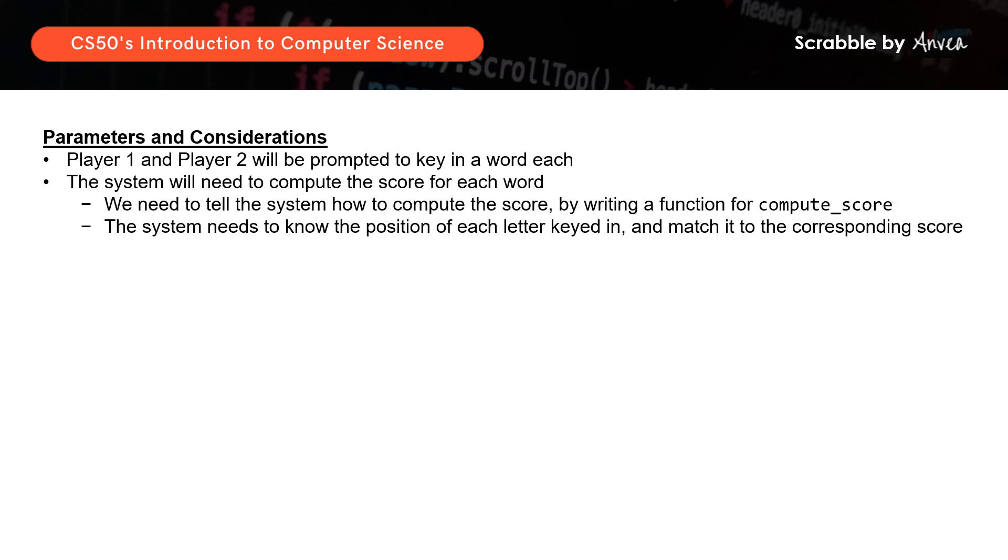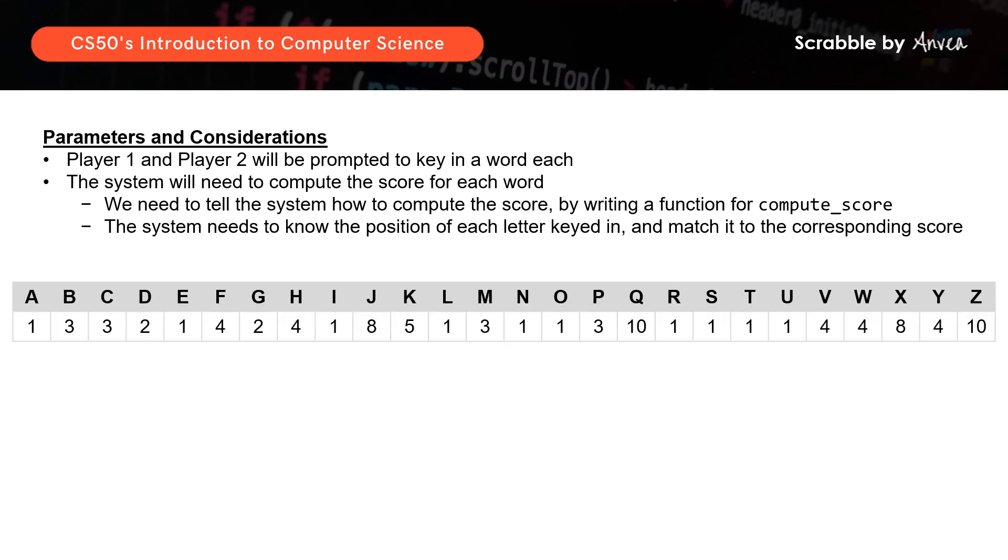The system will then need to compute the score for each word, and this will be done through writing a function called computeScore. So this function needs to tell the system how to find out the position of each letter keyed in, and match it to the corresponding score. So for example, if the player keys in the word violin, the system needs to go through each letter, and this will be the sequence of steps.